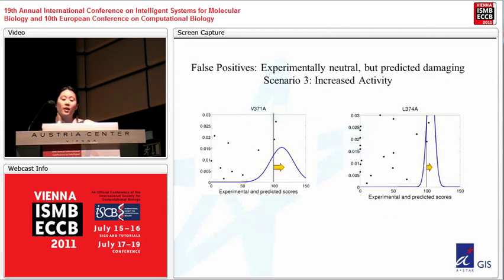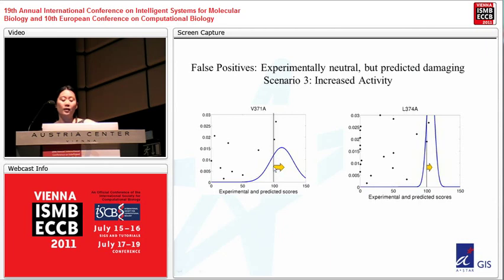Another example of false positives: experimentally neutral in the CBS assay but predicted to be damaging. Actually, when we looked at it, they weren't neutral — they were shifted to the right, meaning increased activity. The substitution valine to alanine at 371 had an activity of about 115%, and another substitution also showed increased activity. These aren't neutral substitutions; they actually increase the function of the protein.